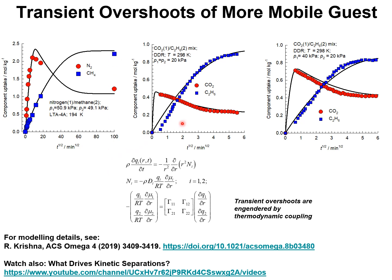Here is another example: uptake of CO2 and ethane in DDR zeolite, which consists of cages separated by eight-ring windows. Experimental data were obtained at 298 Kelvin with partial pressures of both components at 20 kilopascals. The more mobile CO2 experiences an overshoot in its loading, and as time progresses the component loading decreases to its equilibrium loading, while ethane equilibrates in a monotonous manner.